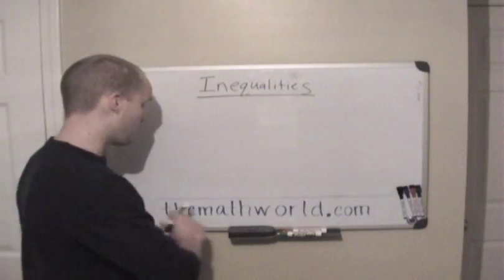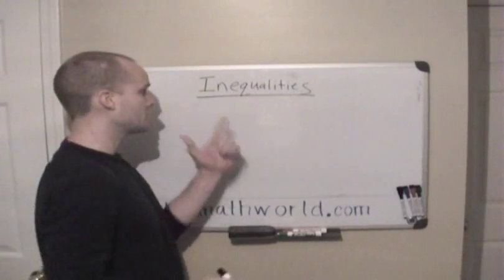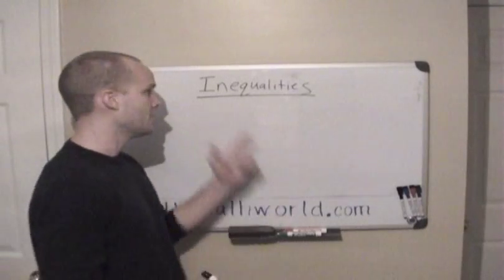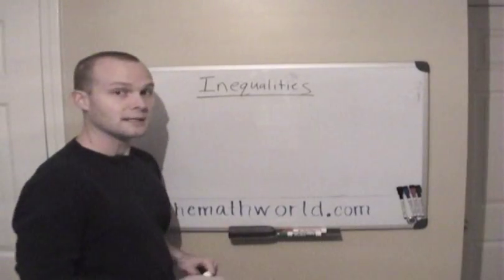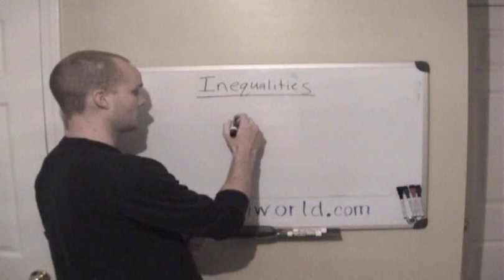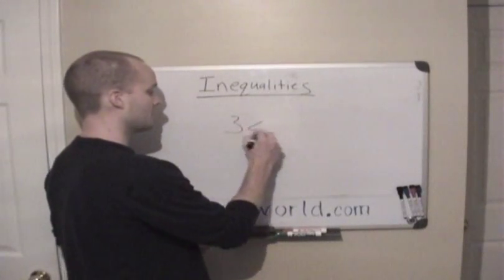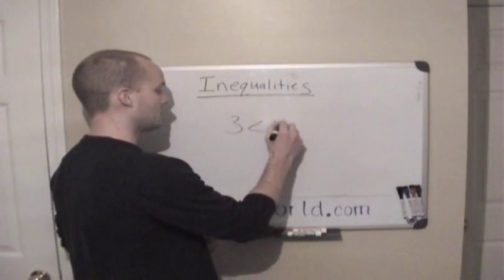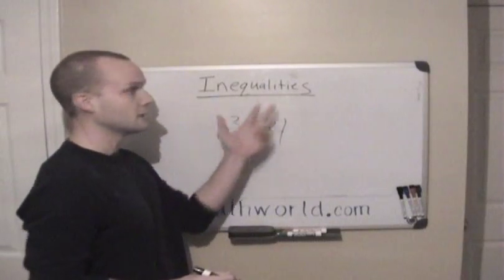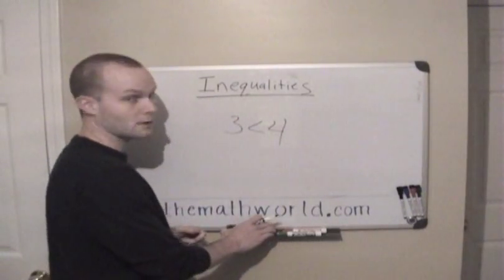Hey everyone, this is Kevin from TheMathWorld.com and today we're going to be looking at inequalities. An inequality is anything that is not equal to something. So 3 is less than 4 — they're not equal, so they're unequal. This is an inequality.